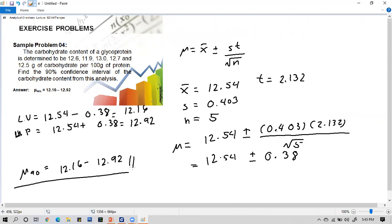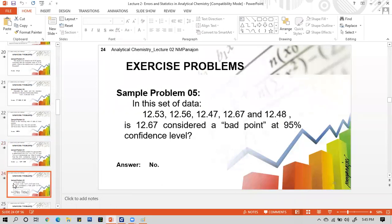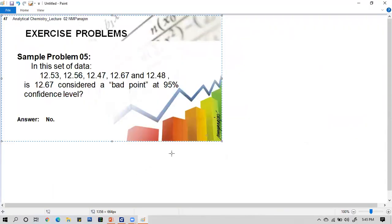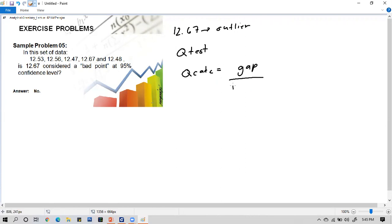Take a screenshot and we will proceed to the next problem. Next is sample problem number 5. In this set of data 12.53, 12.47 and 12.48, is 12.67 considered a bad point at 95% confidence level? Answer is no. What will happen here? We consider 12.67 as the outlier. Is it a bad point or not? We will have a Q test or rejection of the outlier. What is the method? Using the method that Q equals gap all over range.